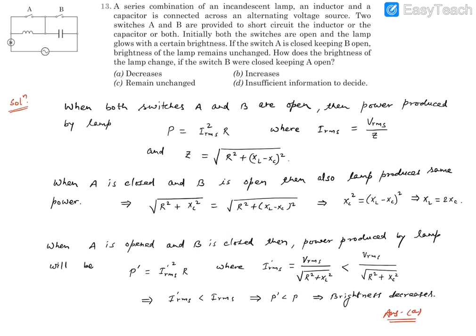So in that case, power is going to be different because current is going to be different—that's IRMS squared into R. Now this different current is going to be VRMS divided by Z. This new Z is going to be square root of R squared plus XL squared.